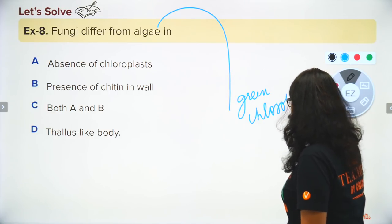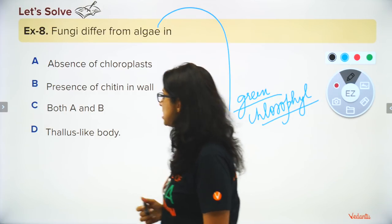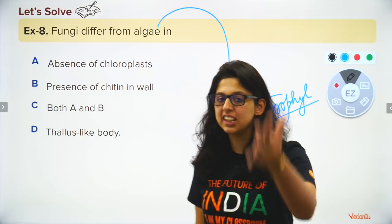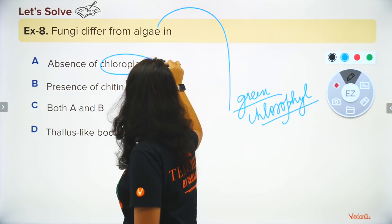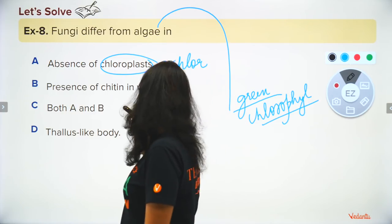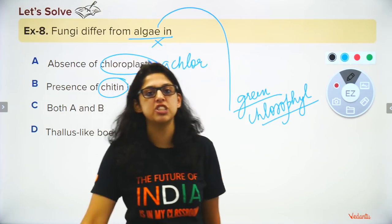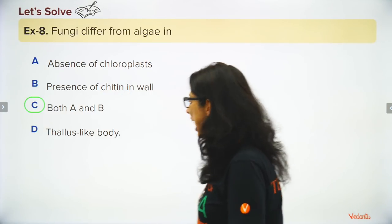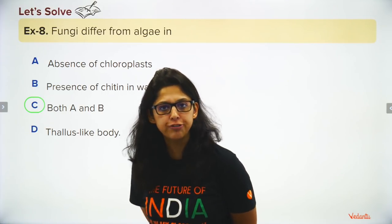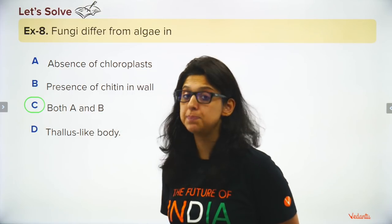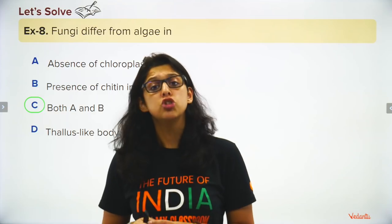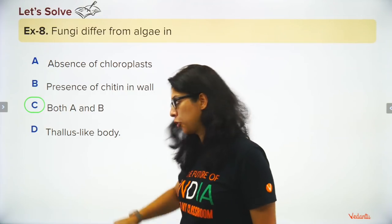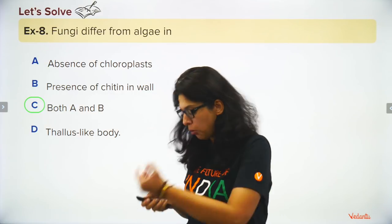Algae is a plant — it's chlorophyllous and green. Fungi, on the other hand, are achlorophyllous — they lack chloroplasts and do not perform photosynthesis. Fungi have chitin in their cell wall, whereas algae have cellulose, hemicellulose, and pectin. Algae have a thallus-like body (Thallophyta, Bryophyta), whereas fungi have a fruiting body that emerges from the soil.